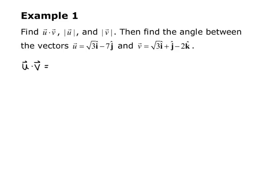Example one from the guided notes asks us to find u dot v, the magnitude of u, and the magnitude of v. Then find the angle between the vectors u equals square root of 3i minus 7j, and v equals square root of 3i plus j minus 2k.